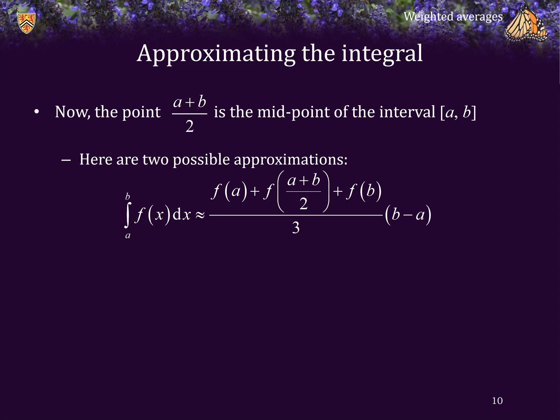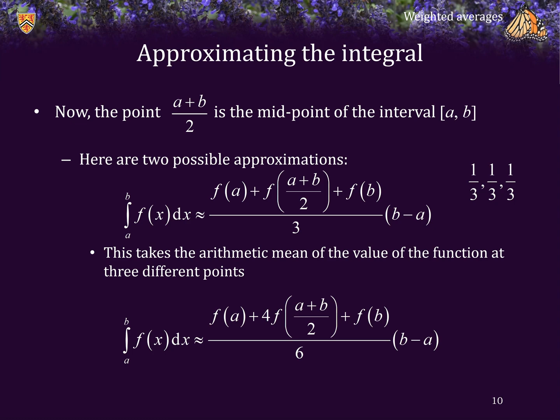In this first one, we're going to sample the value of the function at the endpoints and at the midpoint. We will take the arithmetic mean of these values, and so the weights are one-third, one-third, and one-third. Here's a different approximation: this takes a weighted average of the values f at a, f at the midpoint, and f at b. Now the weights are one-sixth, two-thirds, one-sixth. Significantly more weight is being placed on the central point rather than on the endpoints.